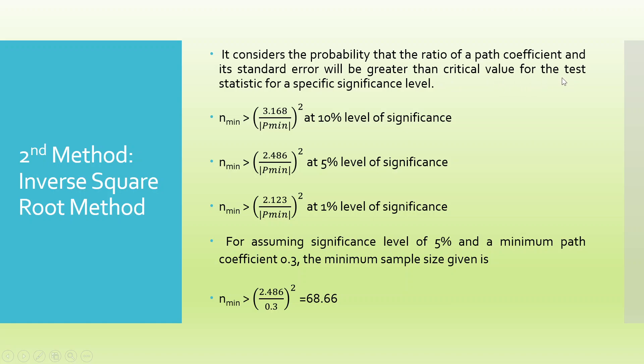It considers the probability that the ratio of a path coefficient and its standard error will be greater than the critical value for the test statistic for a specific significance level. The minimum sample size N minimum should be greater than 3.168 divided by P minimum squared at 10% level of significance. N minimum should be greater than 2.486 divided by P minimum squared at 5% level of significance. N minimum should be greater than 2.123 divided by P minimum squared at 1% level of significance.